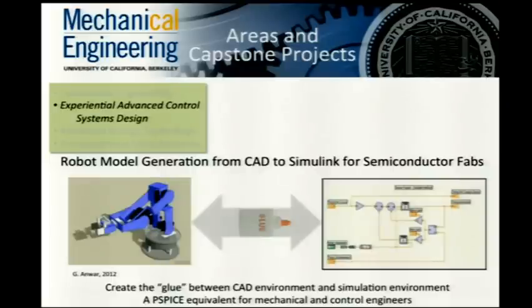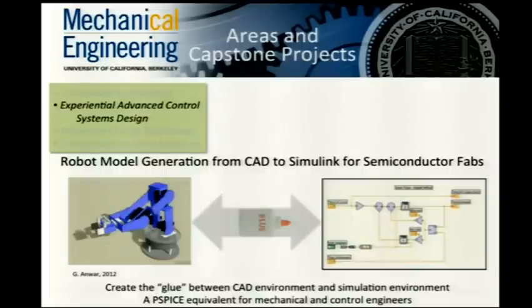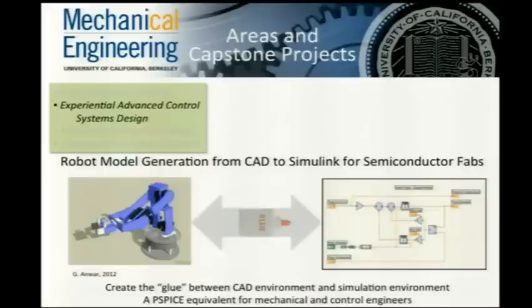The controls area capstone this year was supported by and collaborated with Applied Materials and Intel. It involved connecting the control of robotic devices used for material handling in semiconductor fabrication, developing a simulation environment that allows mechanical and control engineers to pick up, manipulate, position, and process materials flowing through a semiconductor fab with very high accuracy and repeatability. Semiconductor fabs are highly optimized because every second and every gram of material is very expensive.